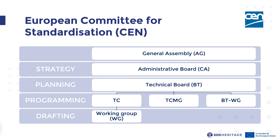The organization of the European Committee for Standardization includes a general assembly, an administrative board, and a technical board acting on planning. At the programming level we have technical committees, which are division bodies with precise scopes and work programs established by the technical board, and technical committee management groups established by the technical committee to undertake specific short-term tasks. These tasks are restricted to individual experts appointed by the parent technical committee or national members.